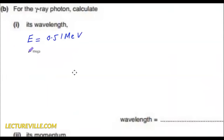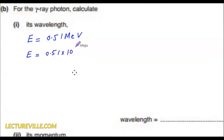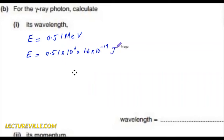First, I calculate the energy in joules. So it becomes 0.51 — mega becomes 10 to the power 6 — multiplied by 1.6 into 10 to the power minus 19, which is the elementary charge. This gives us the energy in joules.